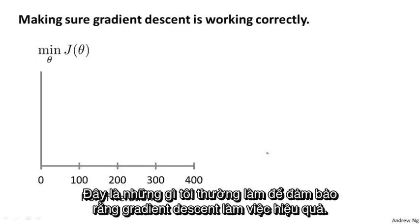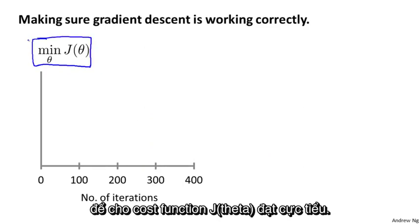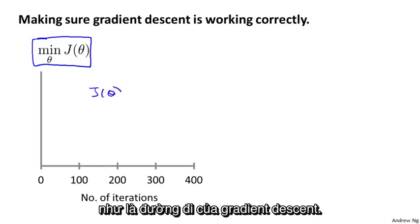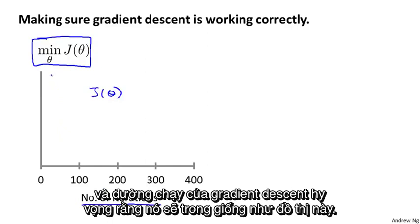Here's something that I often do to make sure that gradient descent is working correctly. The job of gradient descent is to find the value of theta that hopefully minimizes the cost function J(θ). What I often do is plot the cost function J(θ) as gradient descent runs. The x-axis here is the number of iterations of gradient descent, and as gradient descent runs, you hopefully get a plot that maybe looks like this.